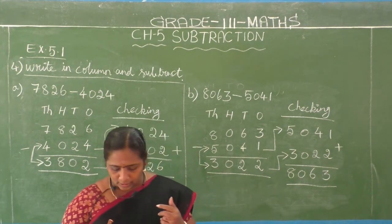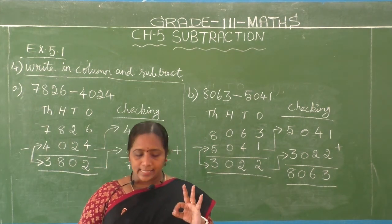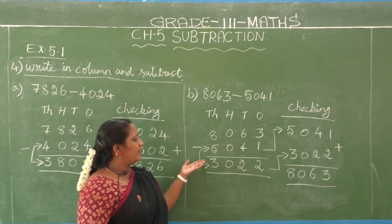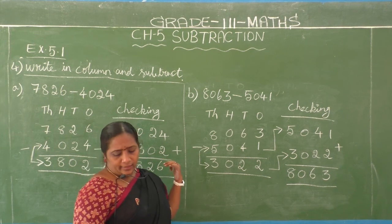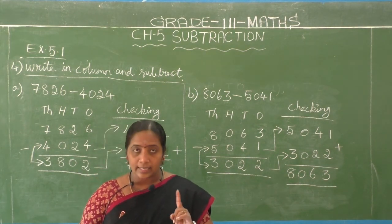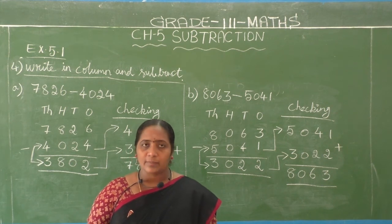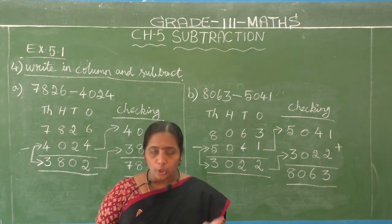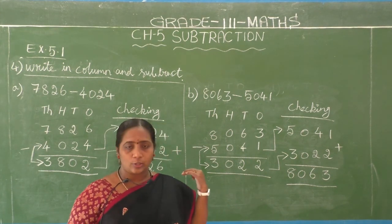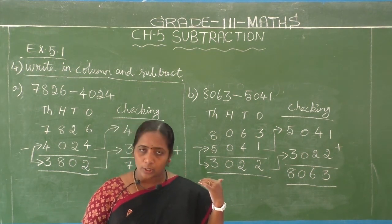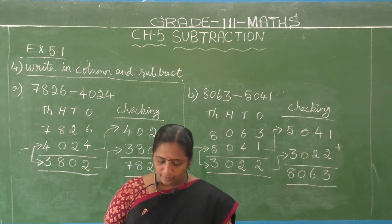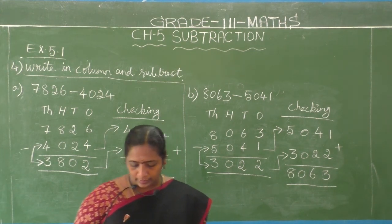In the fourth section they gave 3 sums — A, B, and C. I taught A and B here. The remaining C sum is your homework. From exercise 5.1, copy the fourth and fifth sections in your classwork note. The fifth section also we are going to do in the classwork note.